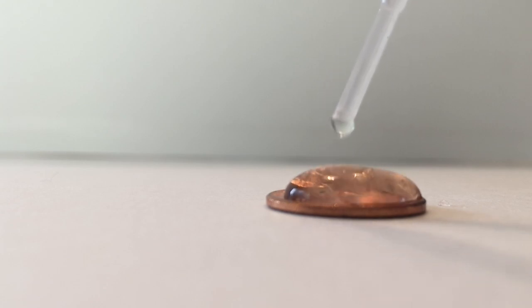Cohesion is the attraction of like molecules to one another. In this case, the like molecules are the H2O molecules in the water drops. Surface tension is a special term we use to describe cohesion between water molecules.